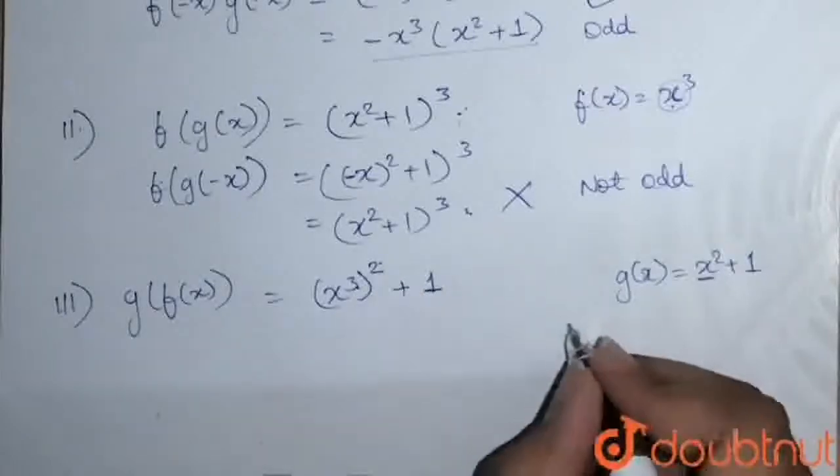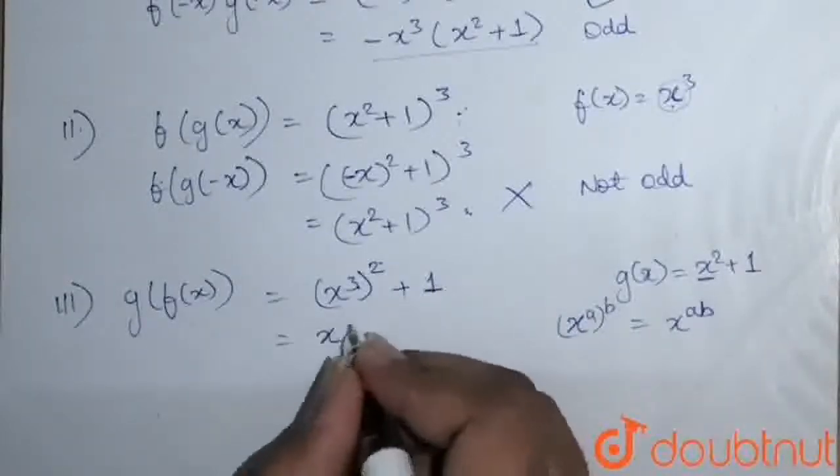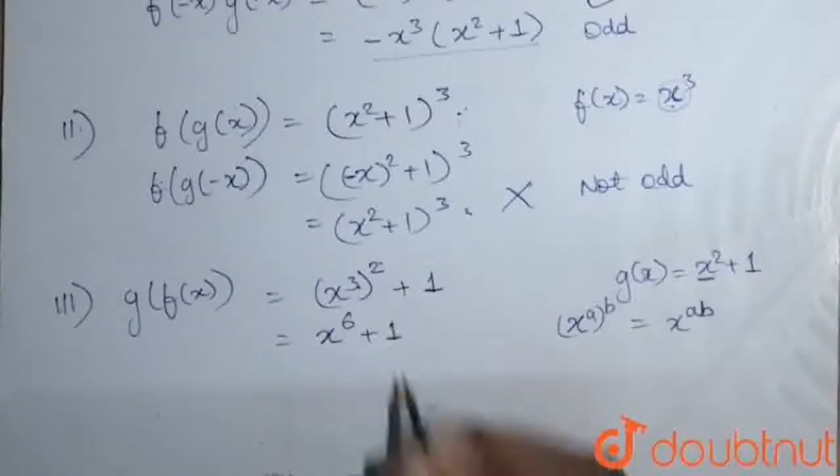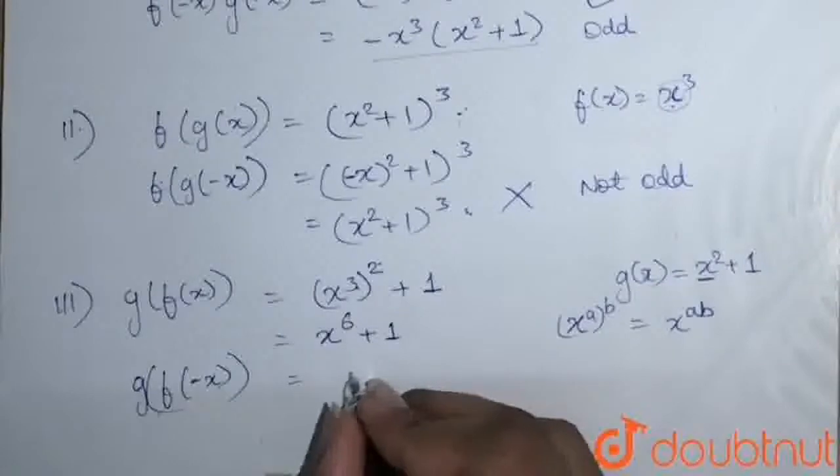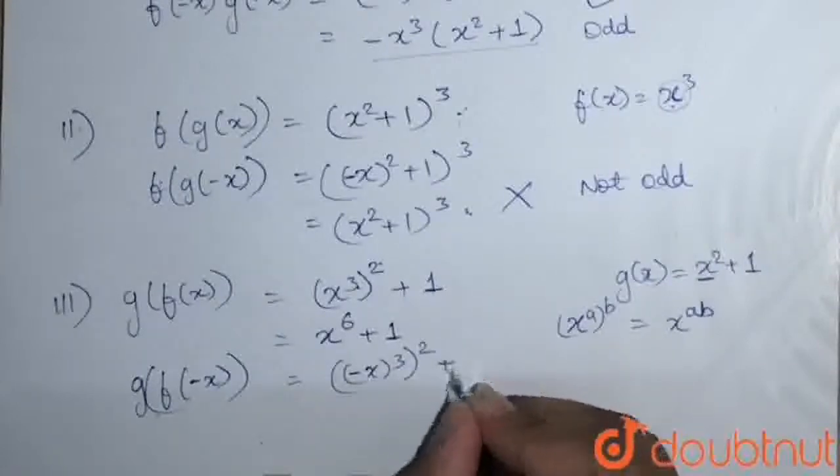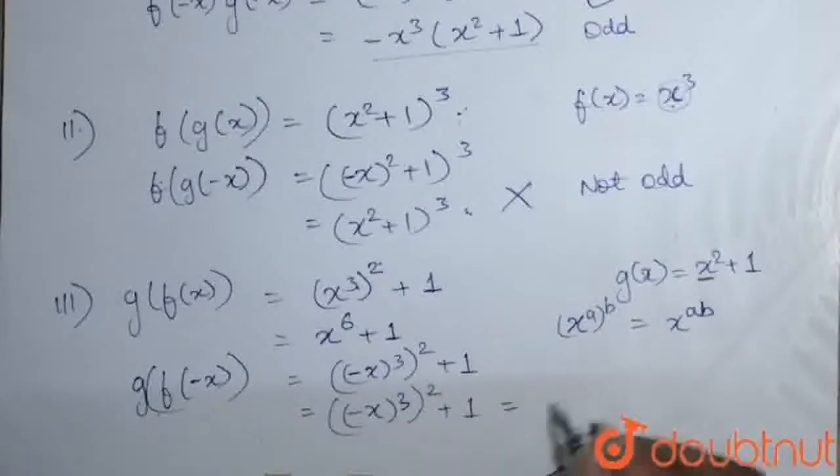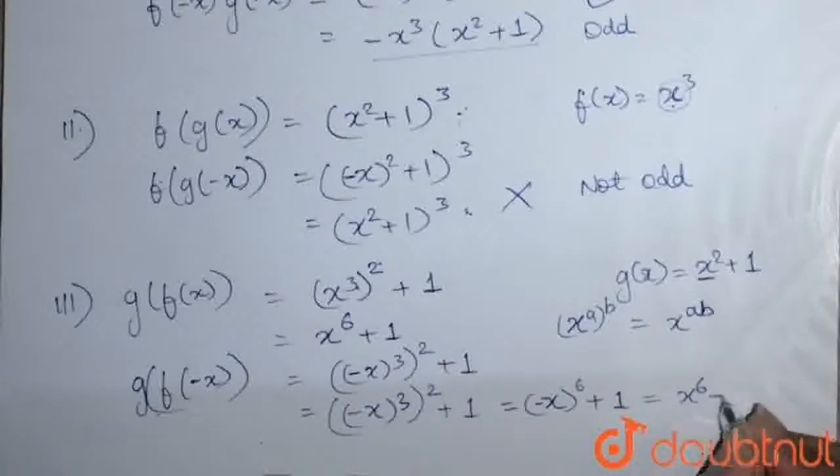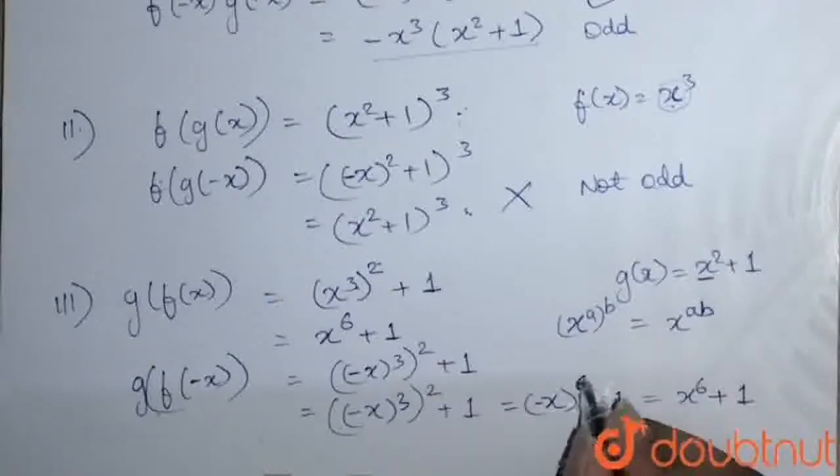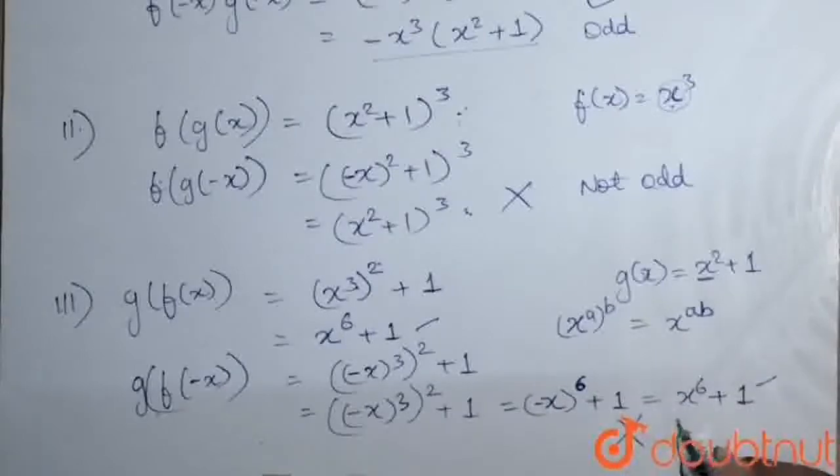Now, as we know that x^a to the power b becomes x^(ab). So it will be x^(3×2) that is 6 plus 1. So g(f(-x)) will be ((-x)³)² + 1. So it is (-x³) and its whole square plus 1. That is again equal to (-x)^6 + 1, which is x^6 + 1, because it is an even power. We can see that these both are equal and not negative of each other. So it is also not an odd function.